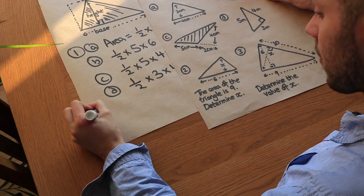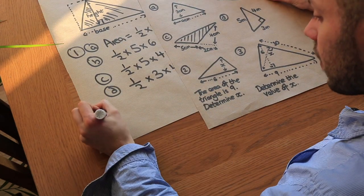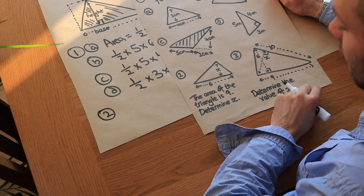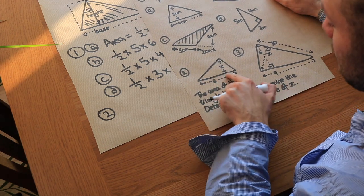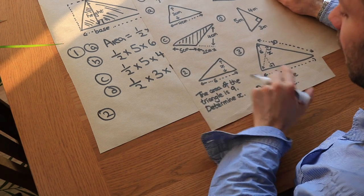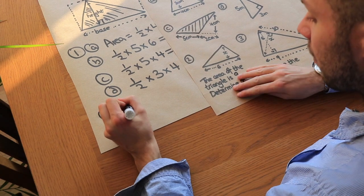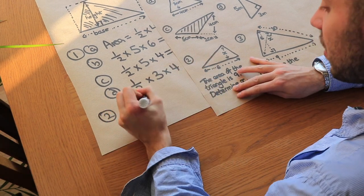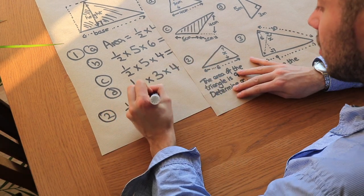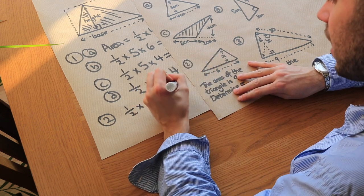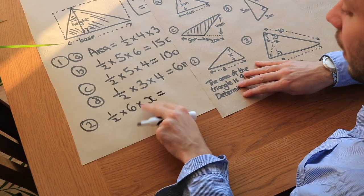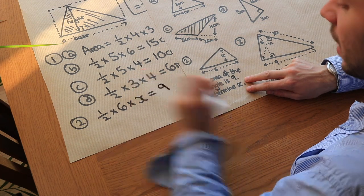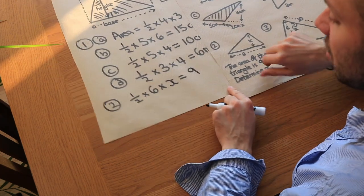Now for question 2, we're given the area and we want to find the height. The base is 6 and the perpendicular height is x. The area of the triangle is half times 6 times x, and we know that equals 9 because we're told the area is 9. We just need to solve this equation.